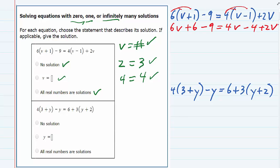But before we move on, we should simplify this by combining like terms. Now on the left, this plus six and minus nine, those are like terms. So I'm going to combine those together. I still have the six v on the left, but the plus six and the minus nine become minus three.